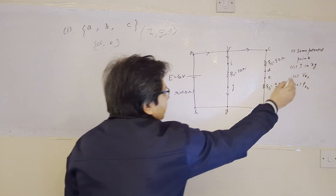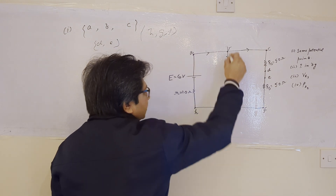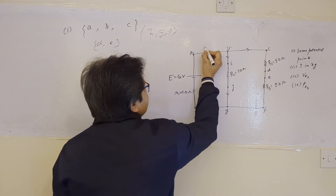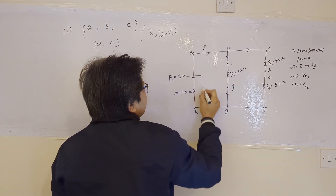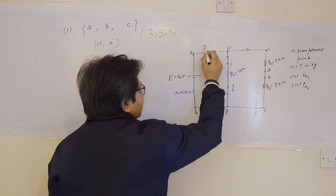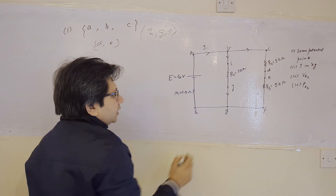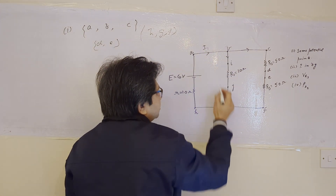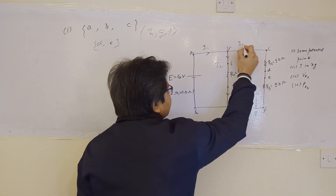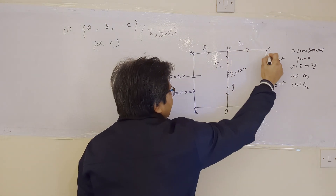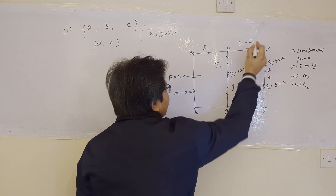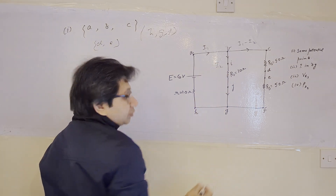To solve Part B, we have to find the current in branch BG. Let us assume the current in the branch through G, H, A, and B is I1, and the current flowing in branch BG is I2. Then from KCL — Kirchhoff's current law — the current in branch B, C, D, E, F, G is I1 minus I2, by applying KCL at node B.